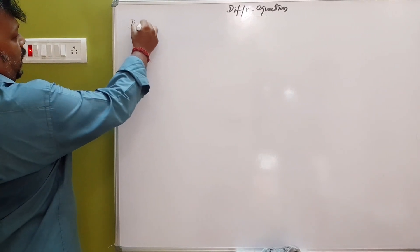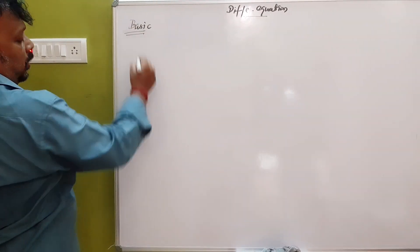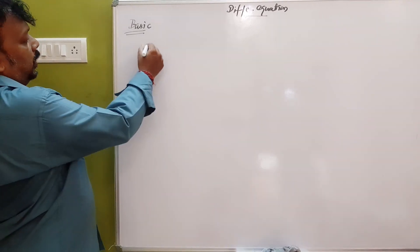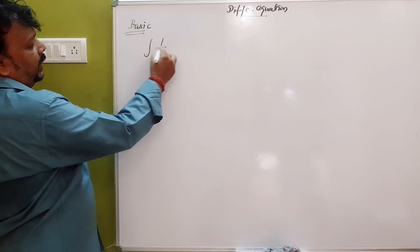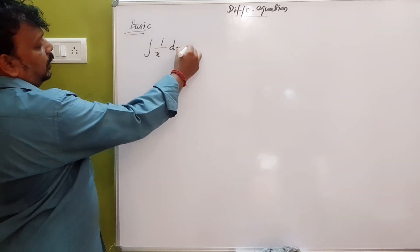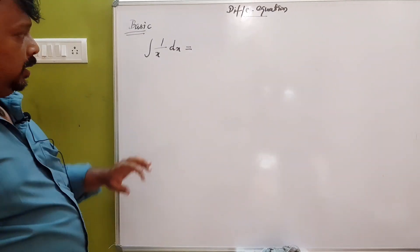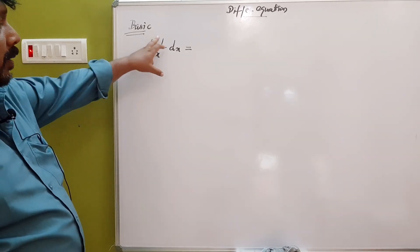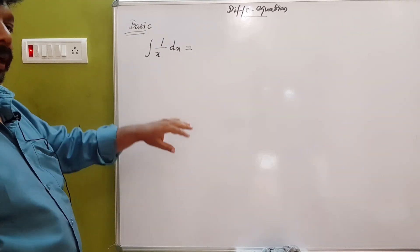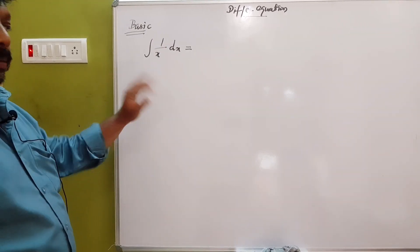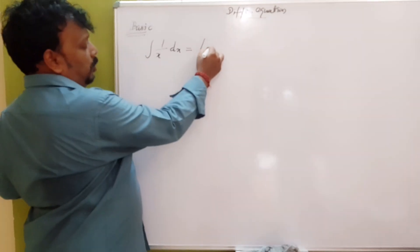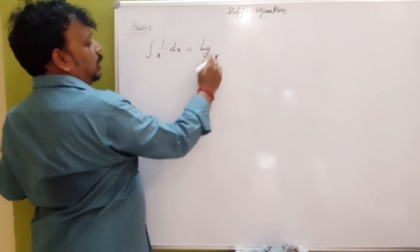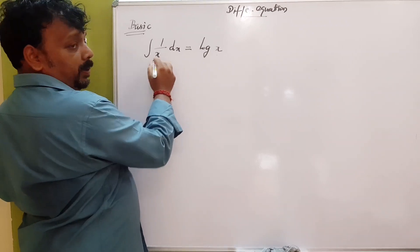We will put 1 over x into dx. This is basically the rule: the integral of 1 over x equals ln x, which is the proper method of using the derivative of x.